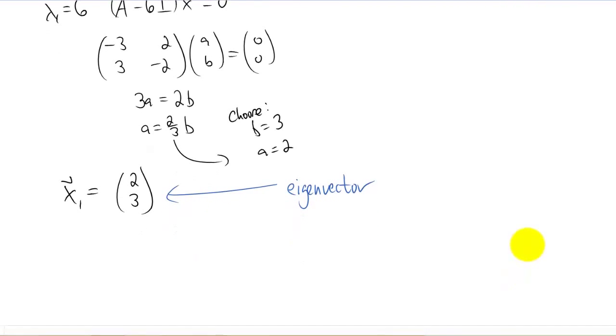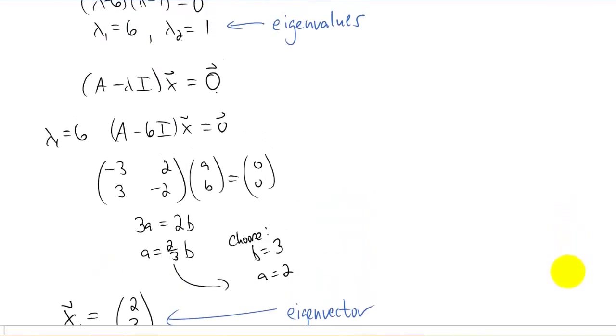Another little piece of vocabulary, that vector that's associated with this eigenvalue is actually called an eigenvector. Okay, so we found our first eigenvector.